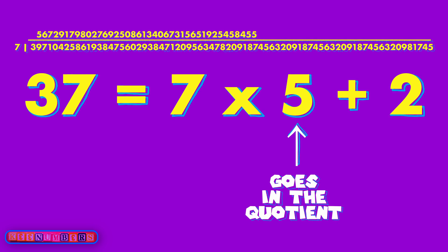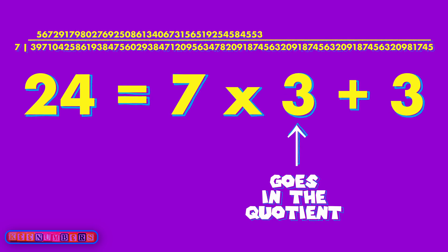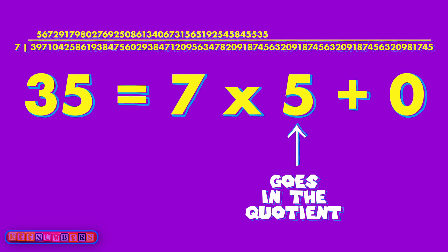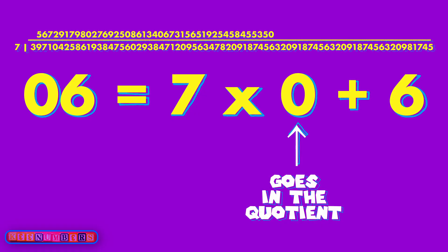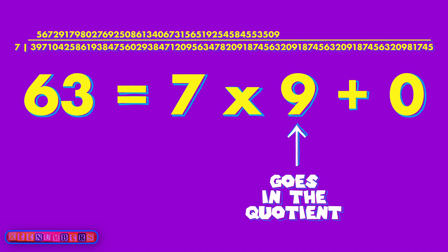Pull down the six — seven doesn't go into six, so you have six left over. The zero goes upstairs. Pull down the three and you get 63 — bada bing bada boom, that's nine times seven again, nothing left over. And that's all we'll do in this video.